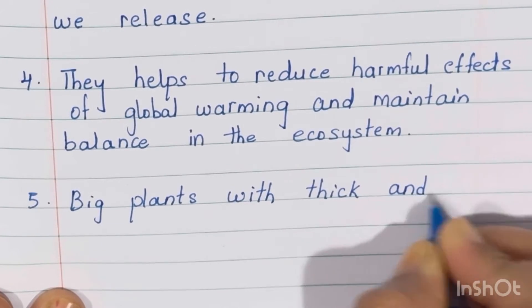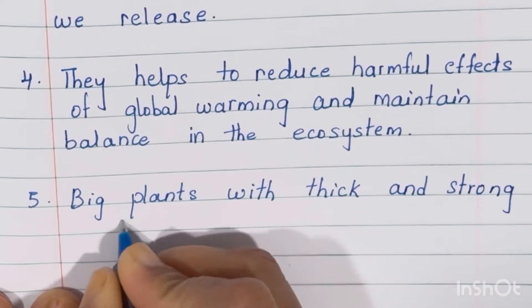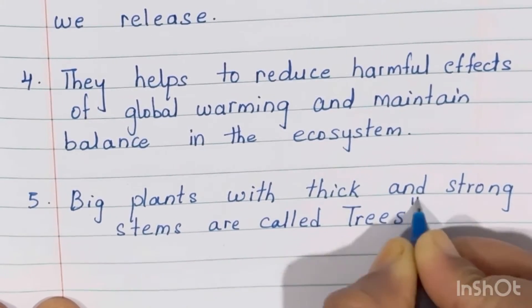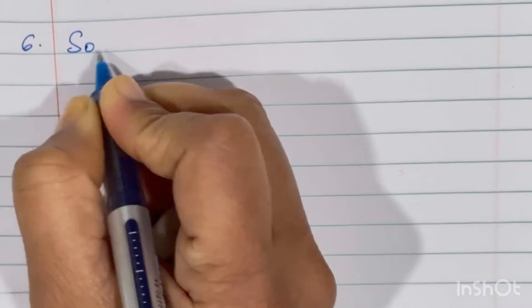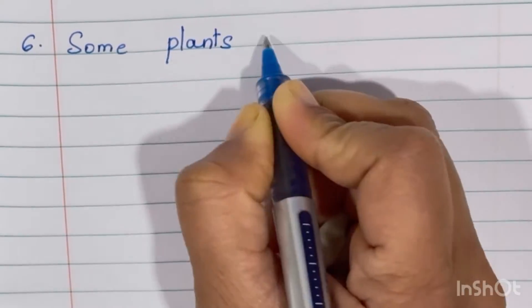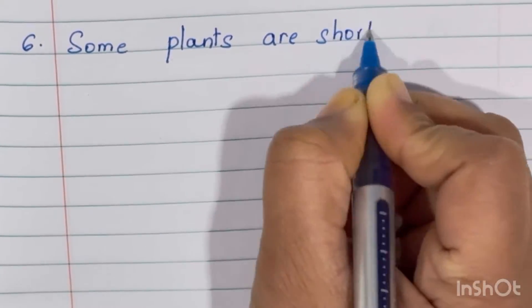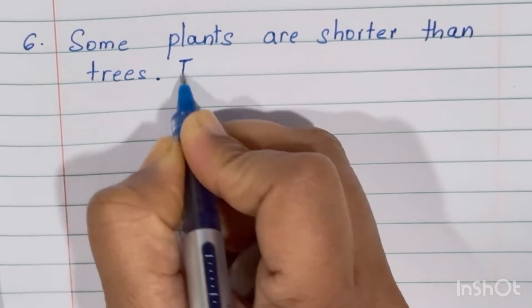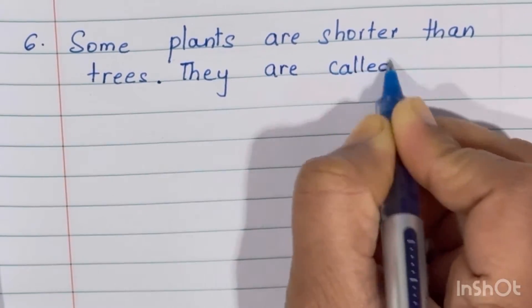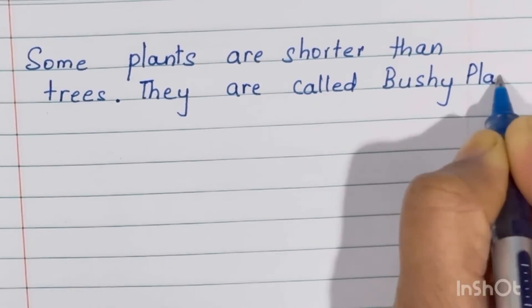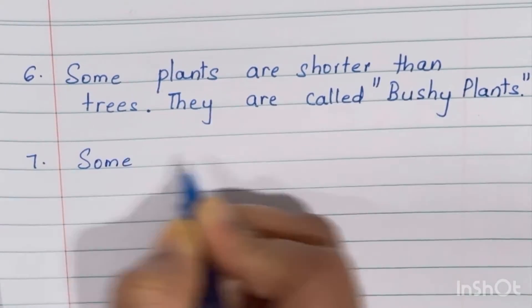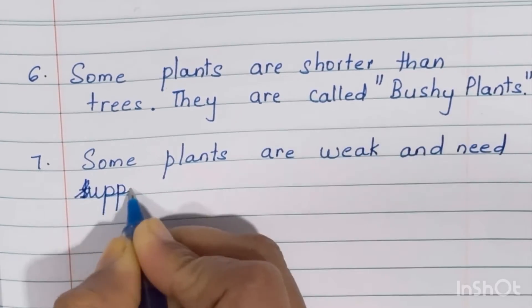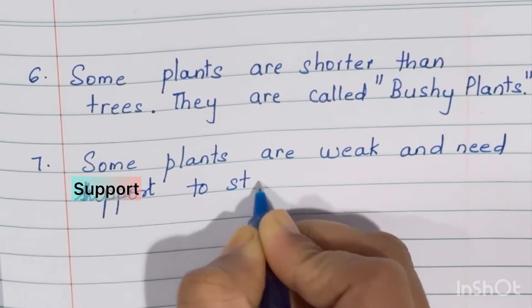Big plants with thick and strong stems are called trees. Some plants are shorter than trees; they are called bushy plants.